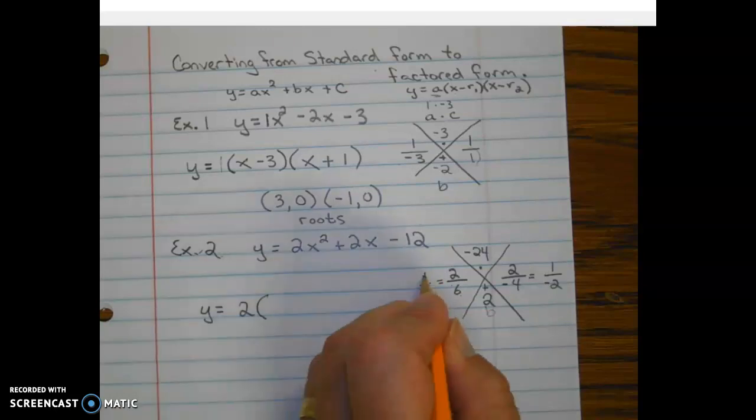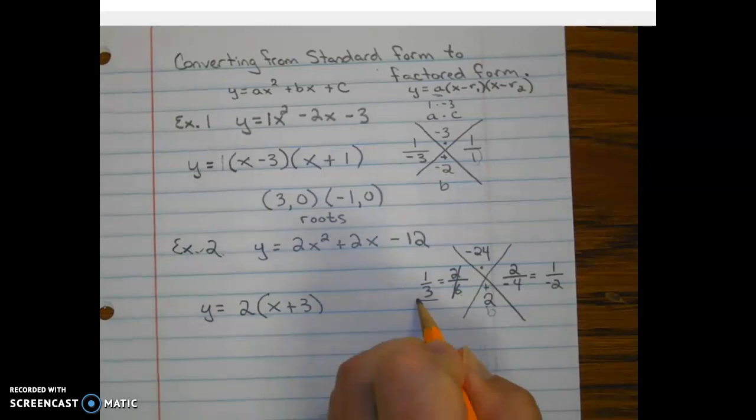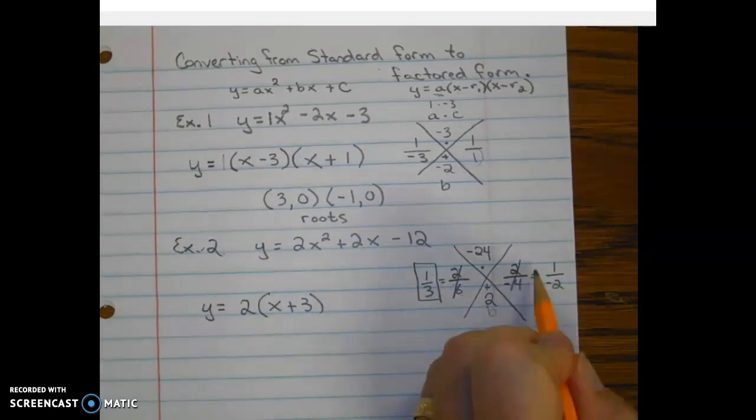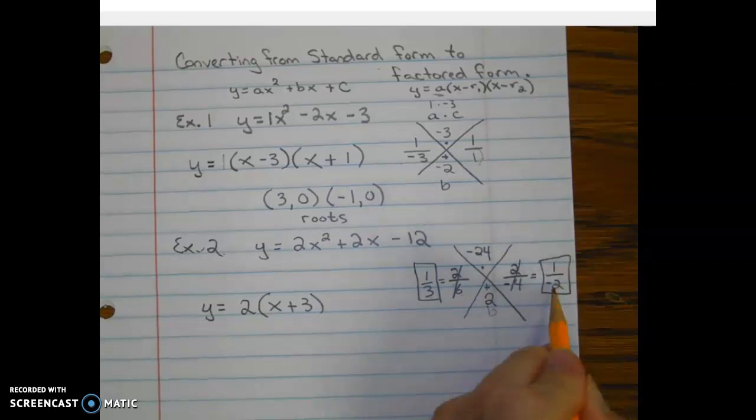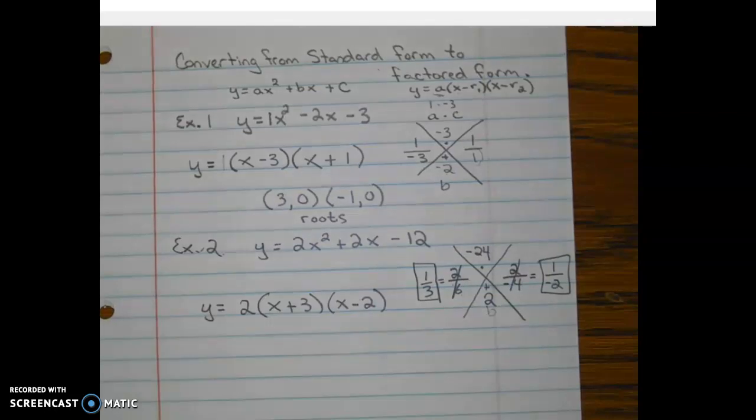All right. So we're going to have 1x plus 3. We're using our new reduced ratio, not our old one. 1x minus 2.